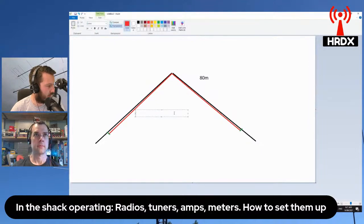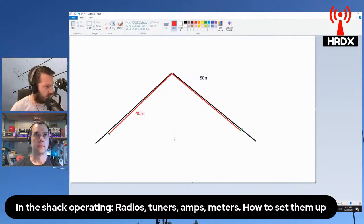Then that will be for 40 meters, and you can continue to do this. What you can do is trim each dipole leg for the frequency that you want and end up with a relevant antenna.